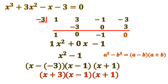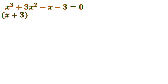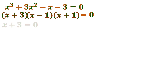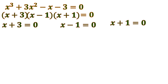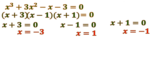So the factored form of x cubed plus 3x squared minus x minus 3 is (x plus 3)(x minus 1)(x plus 1) equals 0. To make the whole expression 0, either (x plus 3) equals 0, (x minus 1) equals 0, or (x plus 1) equals 0. Solving each: x equals negative 3, x equals 1, or x equals negative 1. So the roots are negative 3, 1, and negative 1.